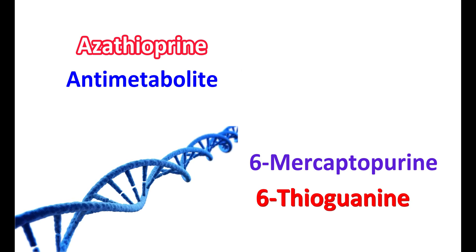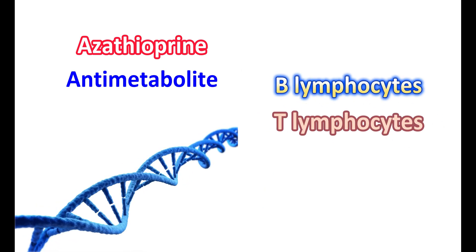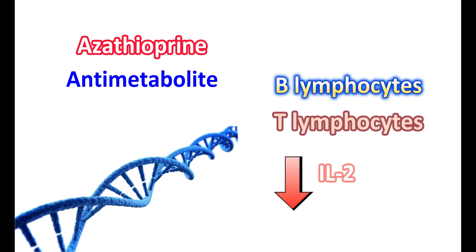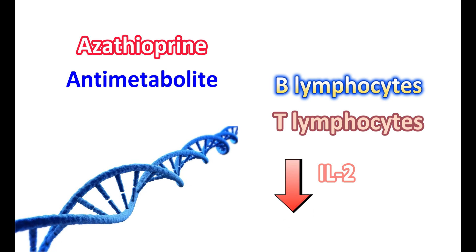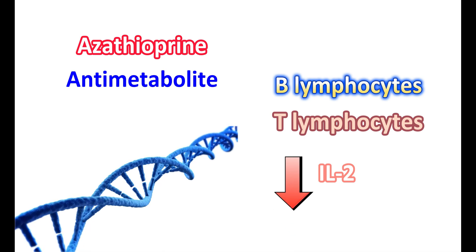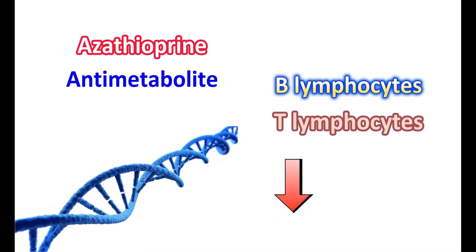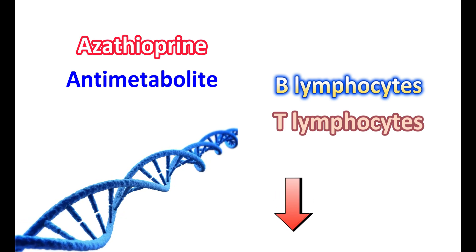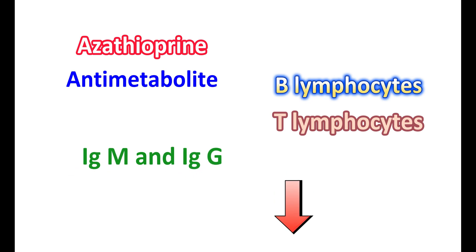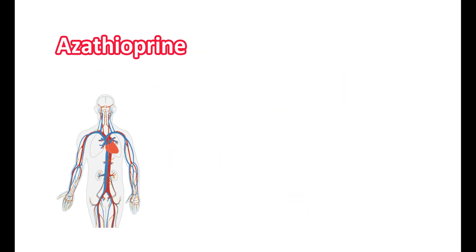Because cell division is inhibited, azathioprine reduces the proliferation of B lymphocytes and T lymphocytes. As T lymphocyte proliferation is reduced, it also reduces the secretion of IL-2 (interleukin-2). IL-2 plays a key role in signaling between T lymphocytes and driving their proliferation. When IL-2 secretion is inhibited, T lymphocyte proliferation is reduced, resulting in decreased immune response. Finally, it inhibits the secretion of antibodies like immunoglobulin M and immunoglobulin G.